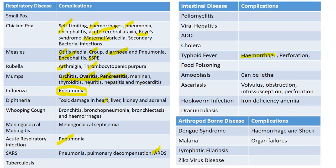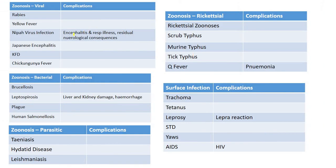For typhoid, hemorrhage is the most common complication; perforation is also a complication. Amoebiasis can be lethal due to complications. Ascariasis complications include volvulus, obstruction, intussusception, and perforation. Hookworm infection causes iron deficiency anemia due to bleeding. Dengue syndrome: hemorrhage and shock are the most common complications. Malaria: organ failures are complications leading to death. Nipah virus: encephalitis and respiratory illness with residual neurological consequences. Leptospirosis: liver and kidney damage and hemorrhage. Q fever: pneumonia is the complication. Leprosy: lepra reactions and deformities in extremities and face.